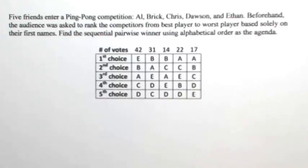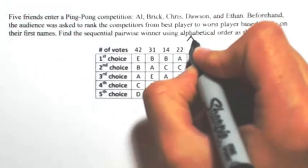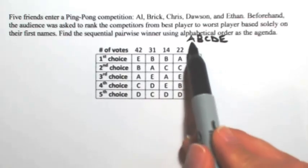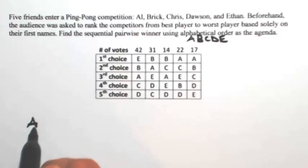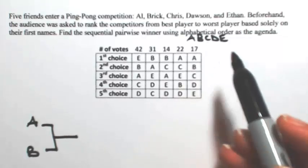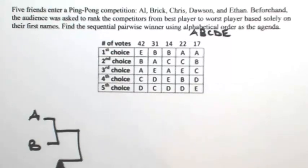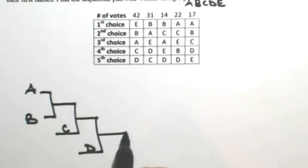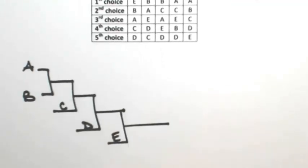When using sequential pairwise, we're going to first put them in alphabetical order as asked. We're going to pit candidates against each other based on the order. So the first competition is A versus B. Whoever wins that competition will move on to go against C. Whoever wins that competition will then go against D, then against E. Whoever wins that competition wins the whole thing.